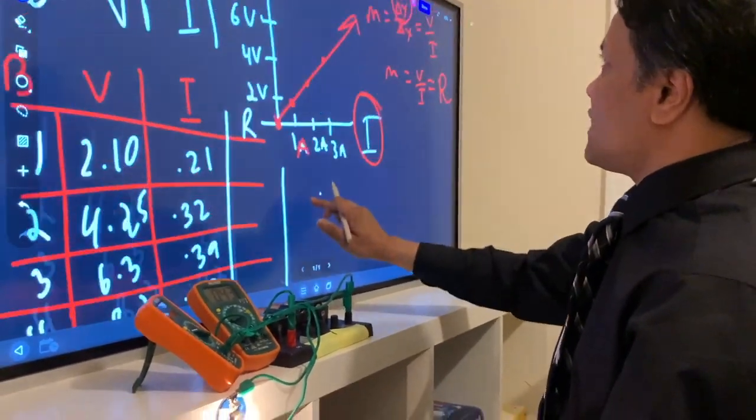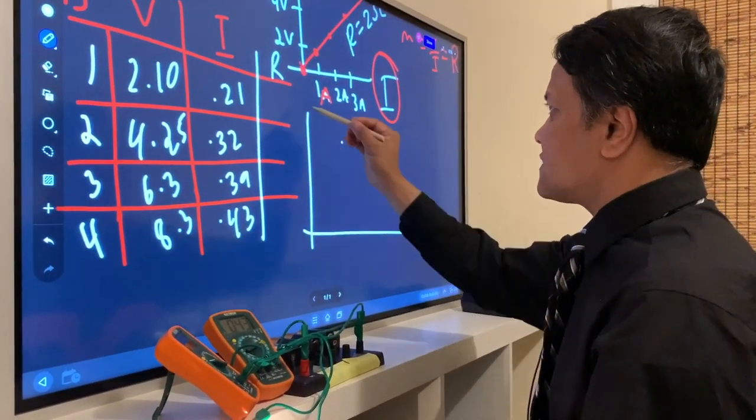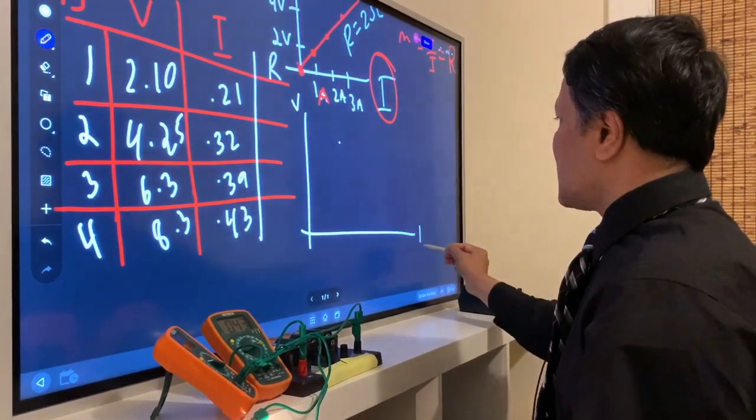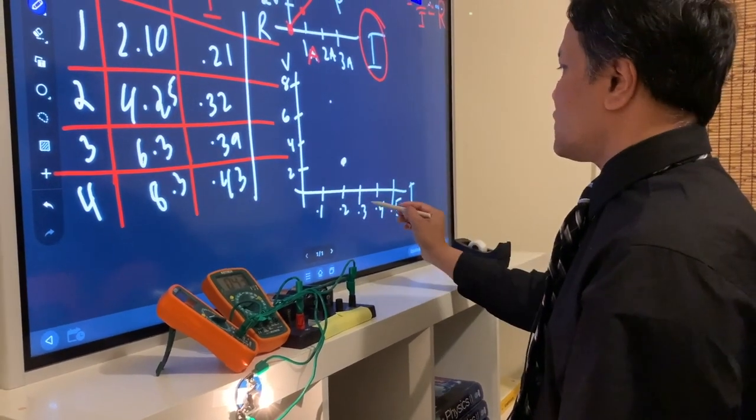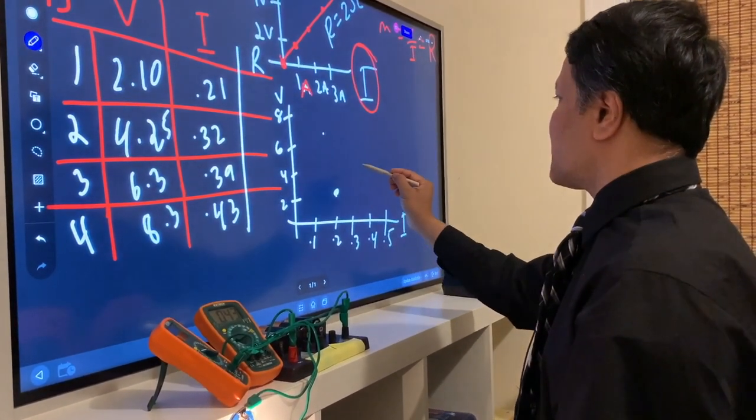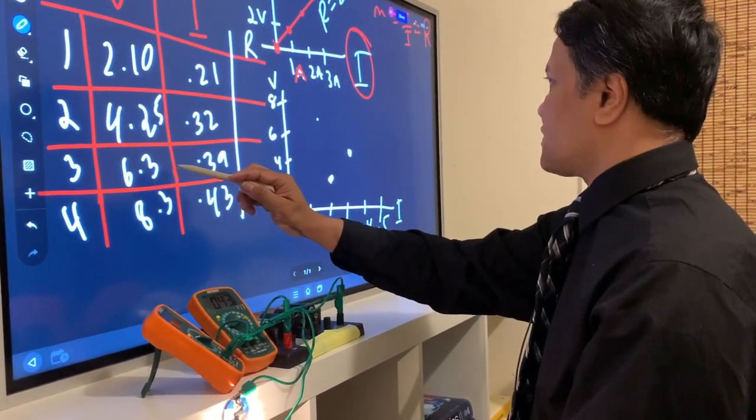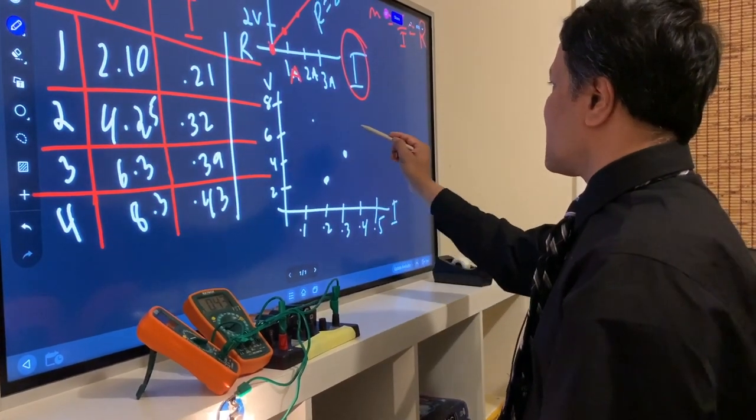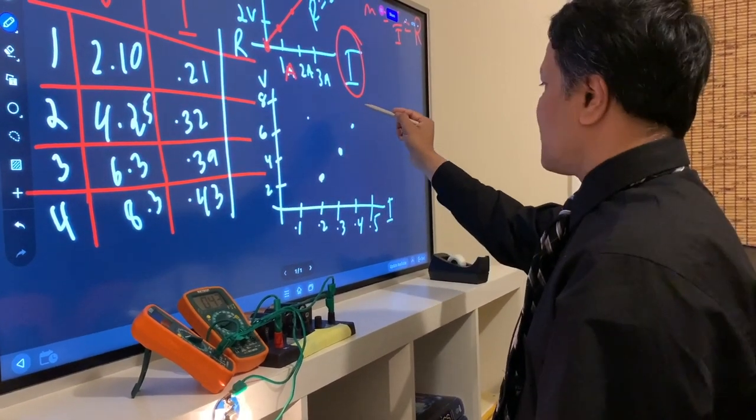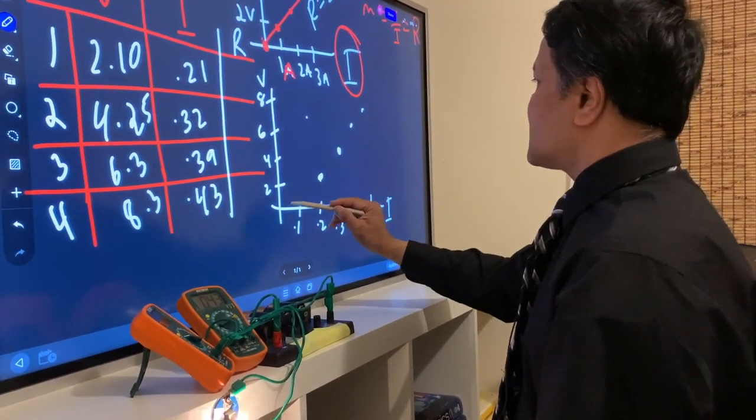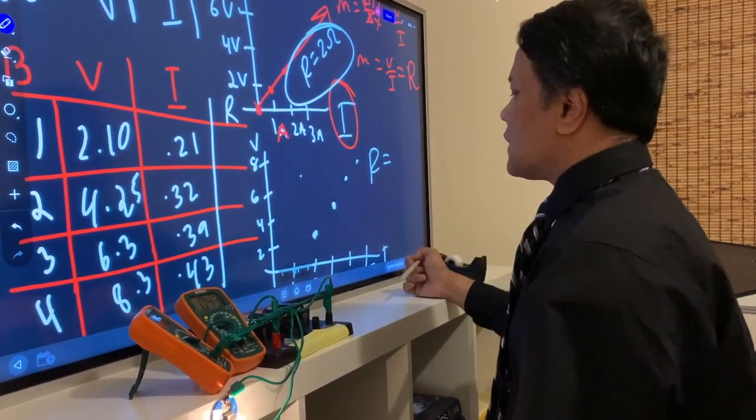So in this case, you have a constant resistance. And resistance is 2 ohms. However, if you plot it, this is the voltage and this is the current. First data is right here. And the second data is 4.25 and 0.32. The third point is 6.3, 0.39. And then 8.3, 0.43. So you see that, unlike this one, you don't have just one constant.